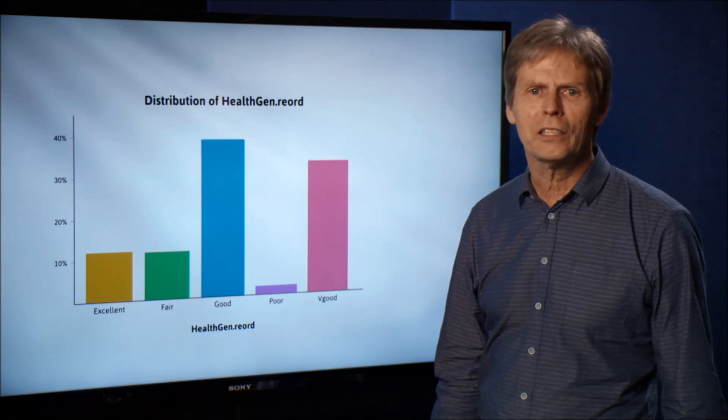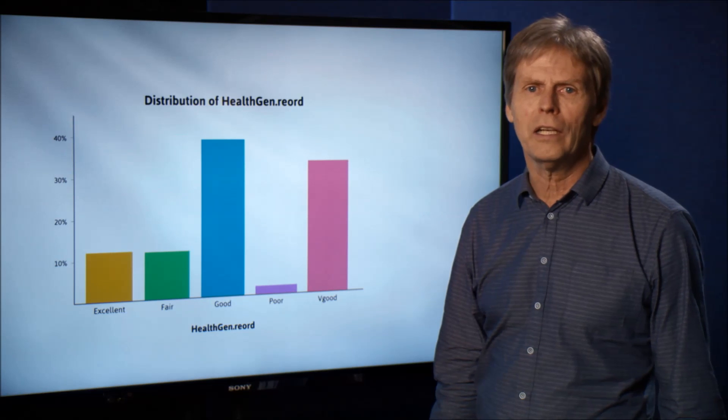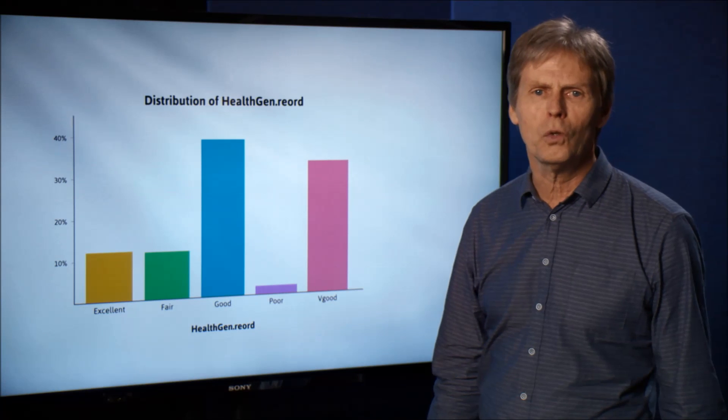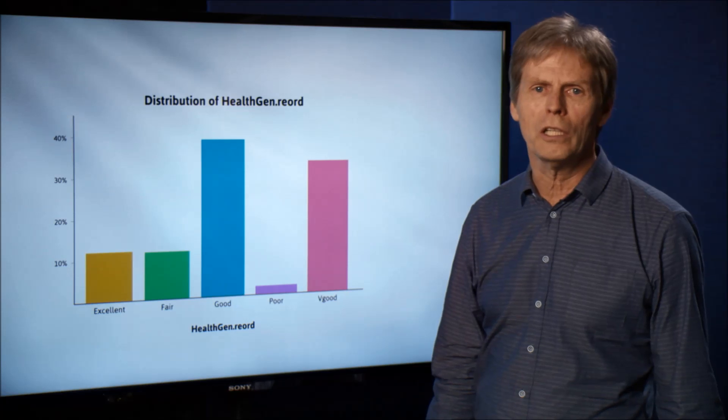For most data analysis programs, the default behavior is to represent categories in alphanumeric order. This means that letters sort alphabetically, and numbers sort in front of letters. Sometimes, by dumb luck, this works just fine.